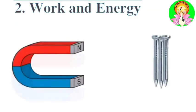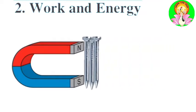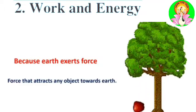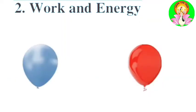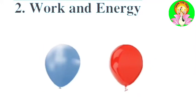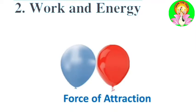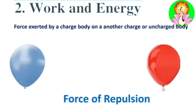The next force is magnetic force. When a magnet is kept near magnetic substances, they get attracted toward the magnet due to magnetic force. The next is gravitational force - because of the force exerted by the earth on an object, the object gets attracted toward the earth. Finally, electrostatic force: when an object is rubbed against another object, a force of attraction develops between them. The force exerted by a charged body on another charged or uncharged body is the electrostatic force.